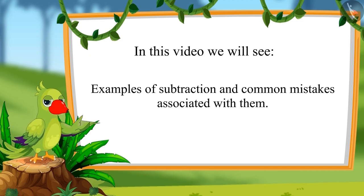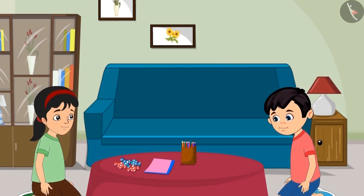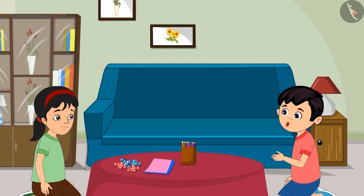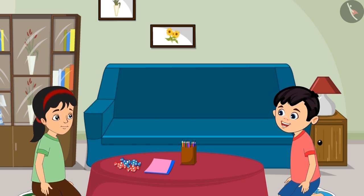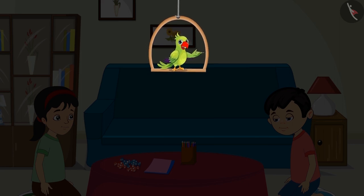Today is Sunday. Tomorrow is auntie's birthday, who is Chotu and Pinky's friend. Pinky has brought four toffees for auntie. Chotu asks: 'Pinky, please give me one toffee.' Pinky replies: 'No Chotu, these four toffees are for auntie. I can't give you even one of these. I will get more toffees for you tomorrow.' Chotu says: 'Oh okay, fine Pinky.'